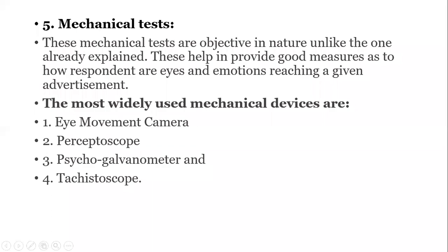Fifth is the mechanical test. Mechanical tests are objective in nature. They provide good measures of how a respondent's eyes and emotions react to a given advertisement. Mechanical devices used include the eye-movement camera, which tracks where you are looking in the advertisement; the perceptoscope, a binocular-type method; the psychogalvanometer; and the tachistoscope. These mechanical devices test the advertisement's effect based on eye movement and consumer reaction.